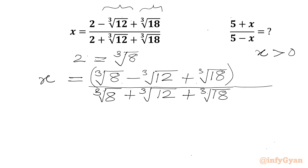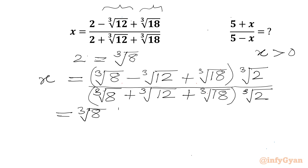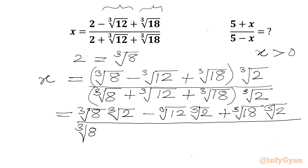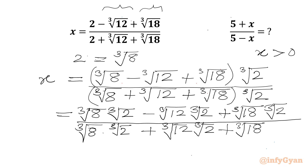Now we will multiply our numerator and denominator by cube root 2. We will get (cube root 8 times cube root 2 minus cube root 12 times cube root 2 plus cube root 18 times cube root 2) over (cube root 8 times cube root 2 plus cube root 12 times cube root 2 plus cube root 18 times cube root 2).